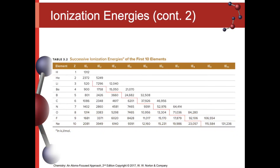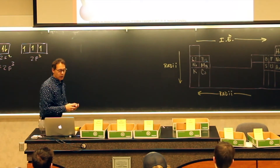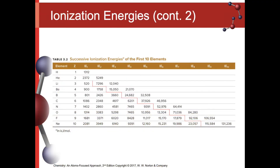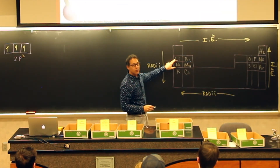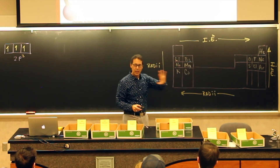Here's another table showing successive ionization energy — how much energy it takes when we remove more than one electron. Starting with lithium: removing the first electron costs 520 kilojoules per mole, just some number. But when we try to remove the second electron, it gets very expensive. The third is also very expensive.